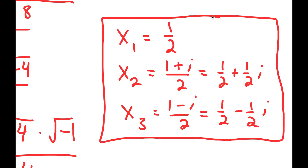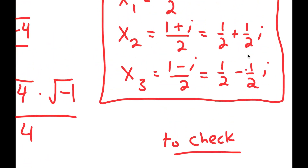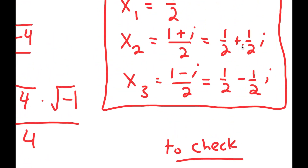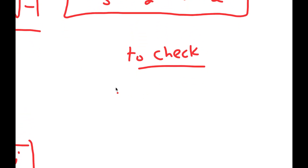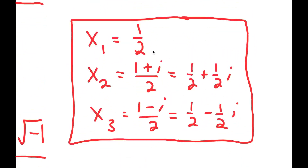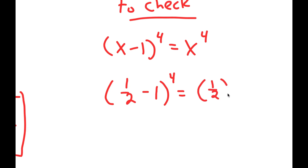Now we're not done yet because we actually have to check. We can't check the imaginary number solutions since they aren't real, but we can check our first solution, x equals 1 half. Plugging into the original equation x minus 1 to the power of 4 equals x to the power of 4, I get 1 half minus 1 to the power of 4 equals 1 half to the power of 4.